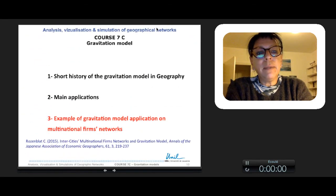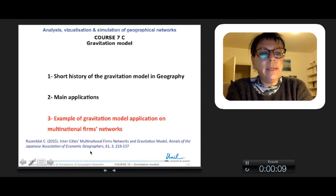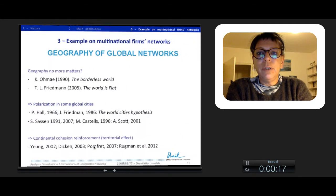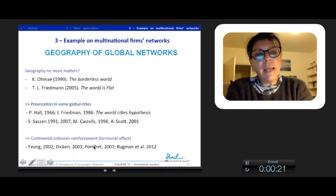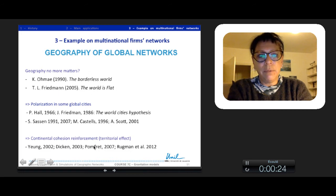I will present you now an example of gravitation model application I developed in a paper I wrote several years ago, but published only recently in 2015 in the Annals of Japanese Association of Economic Geographers. The aim was to apply the gravitation model to multinational firms' networks, despite some authors saying that geography no longer matters, like O'Brien or Friedman, and that there is polarization in global cities with continental cohesion reinforcement and territorial effect, but no more really distance effect.